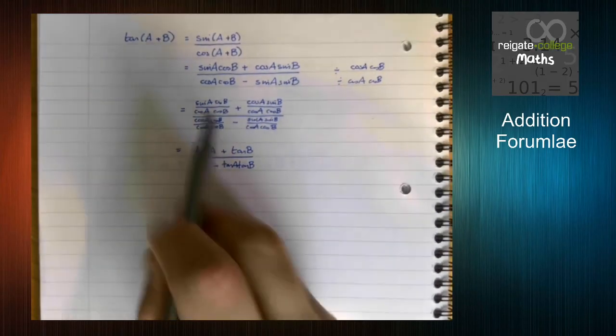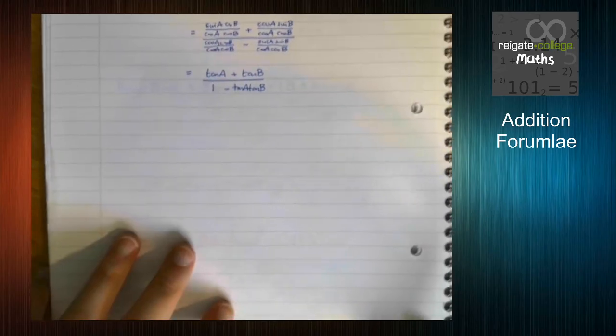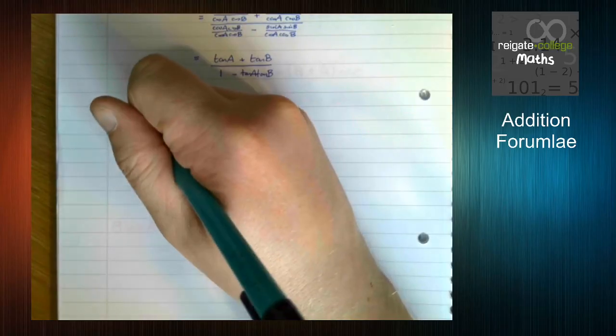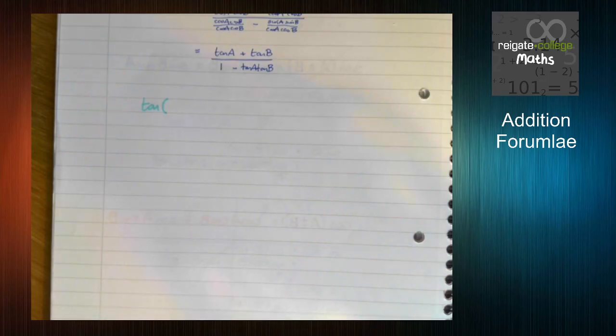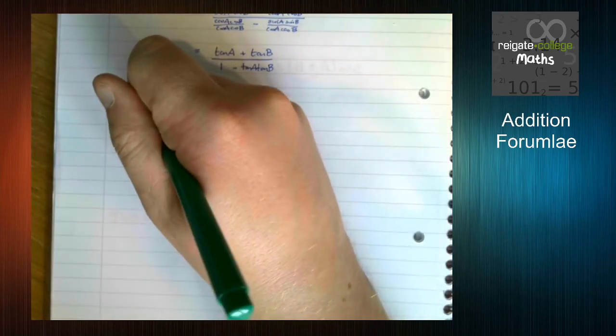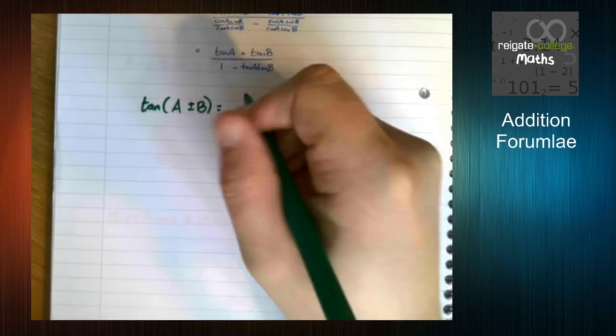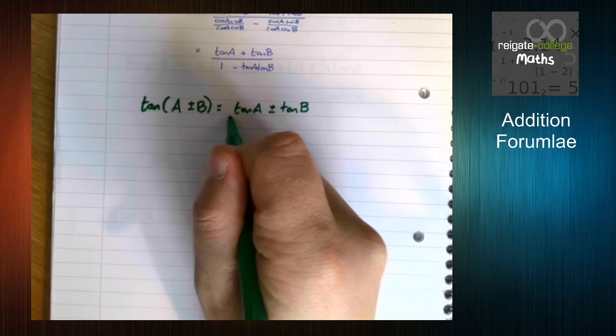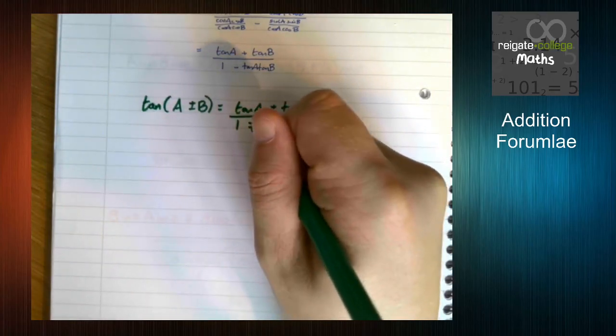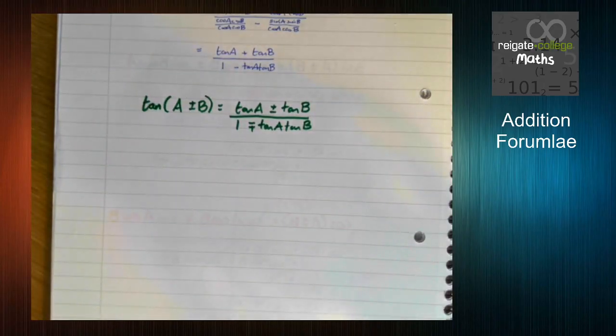And that's how you derive the tan of A plus B using the sin and cos addition formulae. Tan of A minus B is very similar because we end up with the relationship that tan of A plus or minus B is going to be tan A plus or minus tan B over 1 minus plus tan A tan B. And those are the addition formulae.